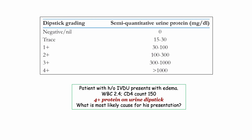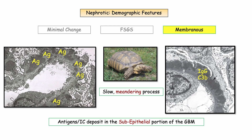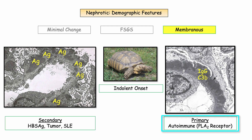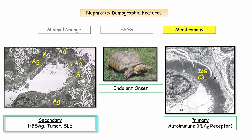Moving on to membranous nephropathy — to understand the demographics, you need a conceptual understanding of the pathogenesis. In this disorder, antigens and/or immune complexes deposit in the sub-epithelial space. In primary membranous nephropathy, the pathogenesis includes autoantibody against the phospholipase A2 receptor. In secondary forms, an associated disorder is discovered — examples include hepatitis B surface antigen deposition, tumor-associated antigens, or immune complex deposition in SLE. In all these instances, the deposits are in the sub-epithelial location and do not provoke a proliferative response.